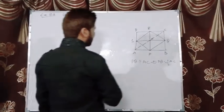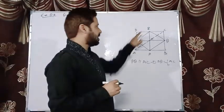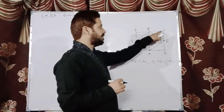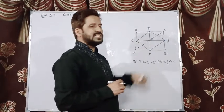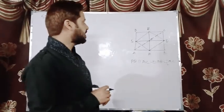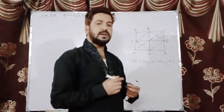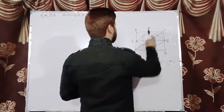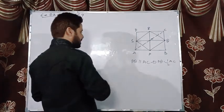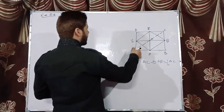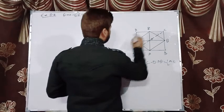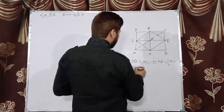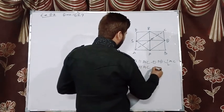Again in triangle ADC, S is the midpoint of its first side AD and R is the midpoint of its second side DC. So SR is the line segment connecting the midpoints of these two sides of triangle ADC. Therefore by the Midpoint Theorem, SR will be parallel to AC — equation 3 — and SR will be half of AC — equation 4.